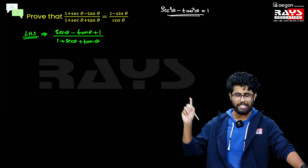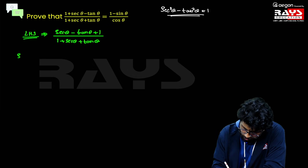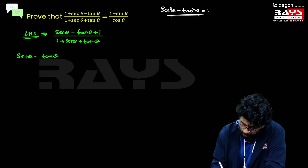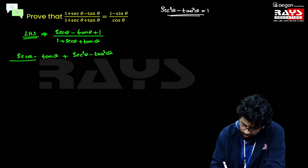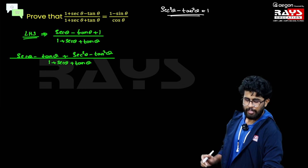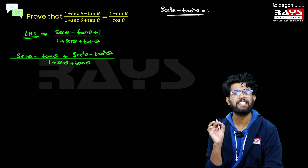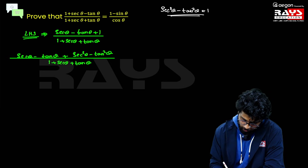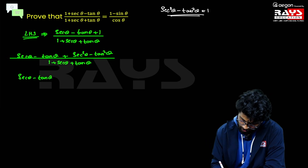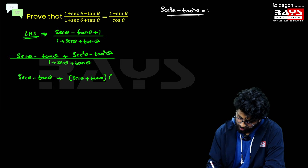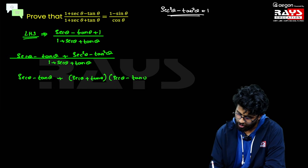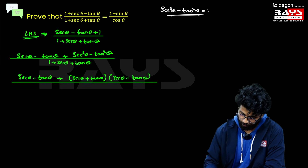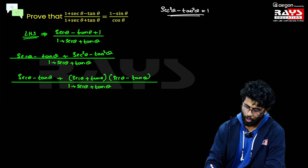So sec²θ − tan²θ = 1 is the identity we are going to use in this problem. Let's rewrite the numerator as (sec θ − tan θ) + (sec²θ − tan²θ), divided by the same denominator. Now sec²θ − tan²θ is in the form of a² − b², so let's expand that as (a + b)(a − b). We will be getting (sec θ − tan θ) + (sec θ + tan θ)(sec θ − tan θ). I hope there is no confusion.